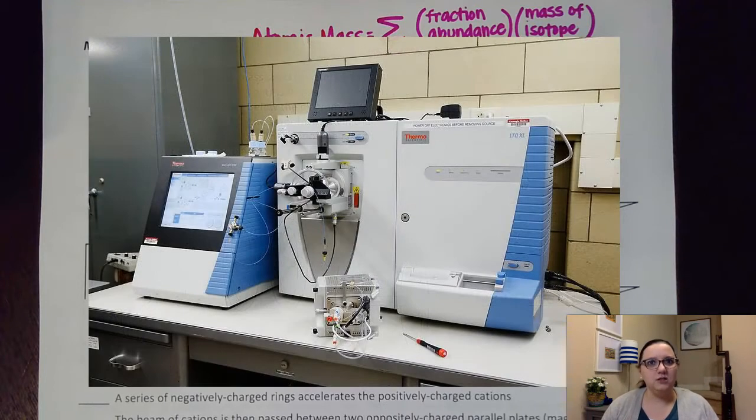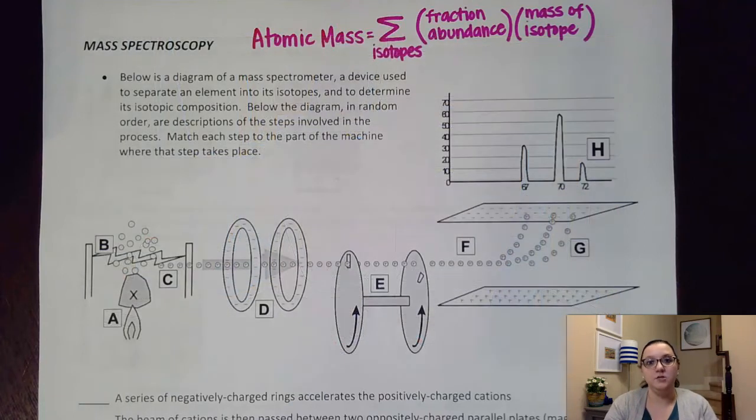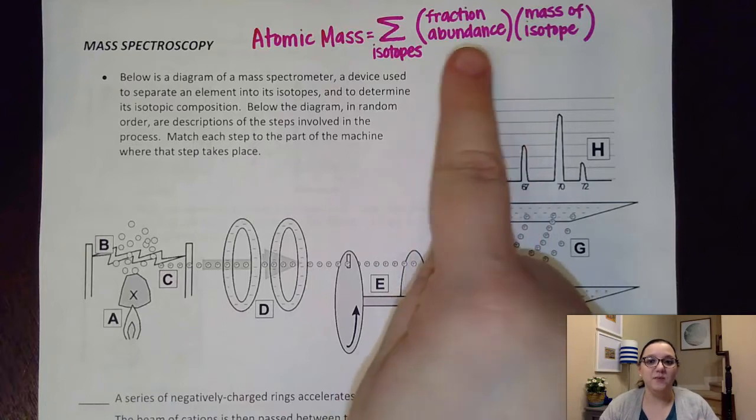Mass spec machines are fairly large and expensive. High schools don't have them because they are so expensive. But you might see one in college, like in an upper level chemistry lab. But basically what you do is you put your element sample into the machine, and it analyzes it for you and gives you this information.